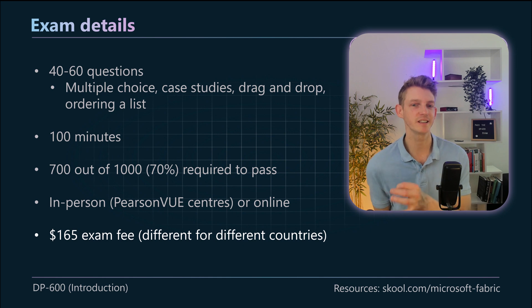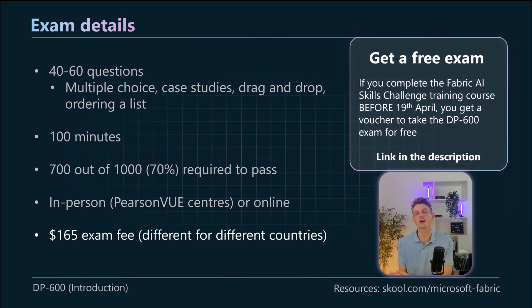So there is an exam fee which is 165 dollars for people in the USA, it varies for different countries. But if you look on the right hand side we've got a free exam. So if you're very quick and you go to the link in the description and you complete the Fabric AI Skills Challenge training course before the 19th April, so you've only got a few days, you can get a voucher to take the DP-600 exam for free. So you can do that skills challenge training very quickly, get your free voucher and then watch all of this series on YouTube. And as long as you take that exam I think it's before June the 22nd or something, so you've got two or three months to kind of go through the material at your own pace and then you get to save yourself 165 dollars or the equivalent in your currency in your country.